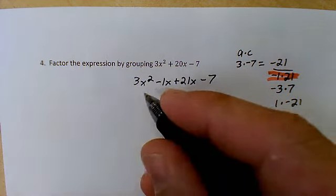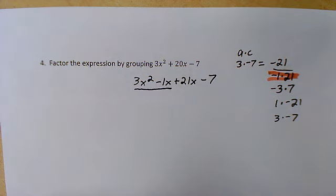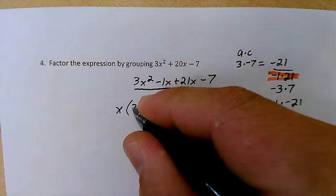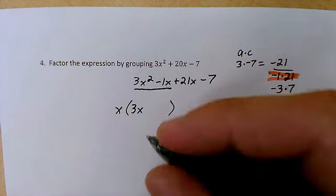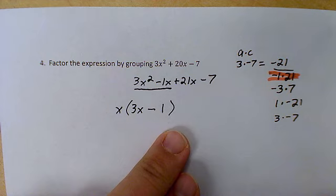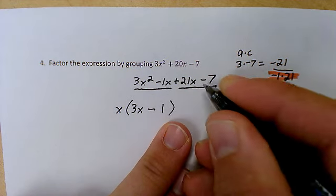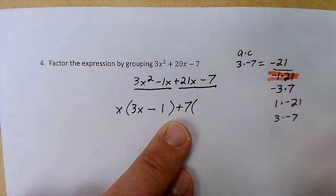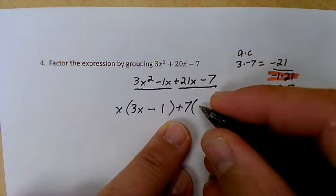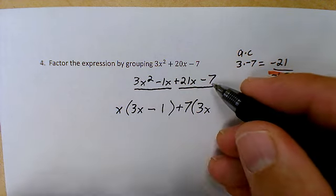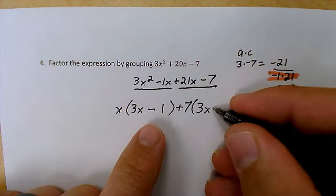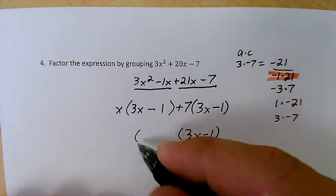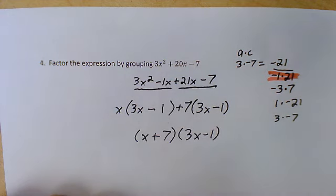Now I've got my two groups. I'm going to take my first group and factor out the GCF of x. 3x² divided by x is 3x. -1x divided by x is -1. Now I'm going to take the second group and factor out the GCF. Here, the biggest factor that divides out of both of these is 7. I will use a positive 7, since that's what the lead sign says. 21x divided by 7 is 3x. That matches. Good. -7 divided by 7 is -1. And that actually matches as well. So 3x - 1 is one of my two factors, and the x + 7 is my other.